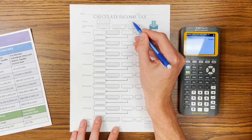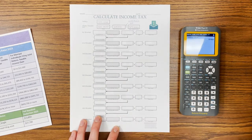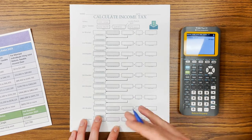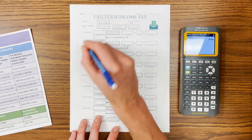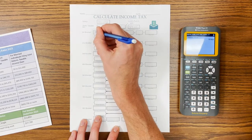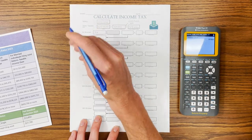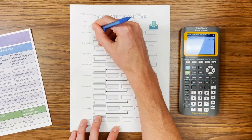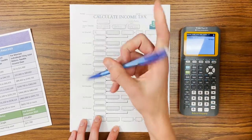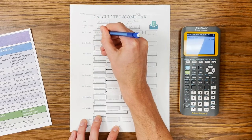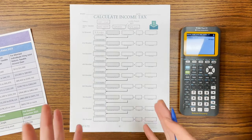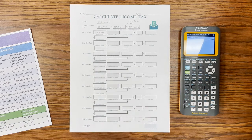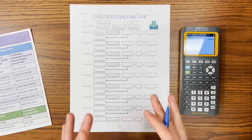Again, if you had a traditional contribution to an IRA, 401k, 457, or 403b, it would come out now and reduce that figure. So our state taxable income is $97,450. Then we start looking at our brackets. Maryland is one of the states that has a progressive tax system, which means there are brackets.